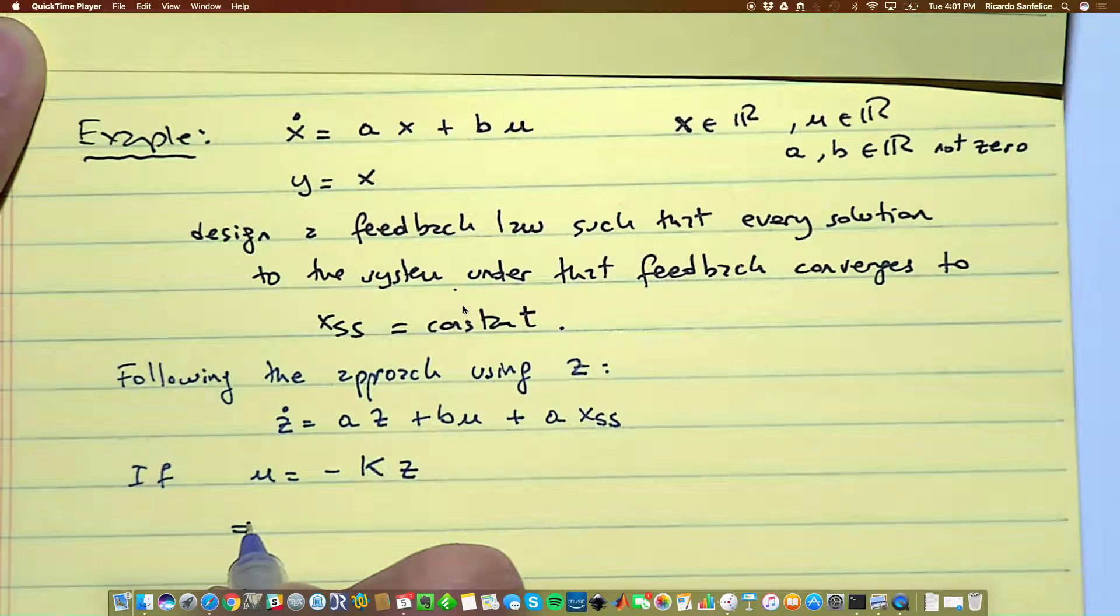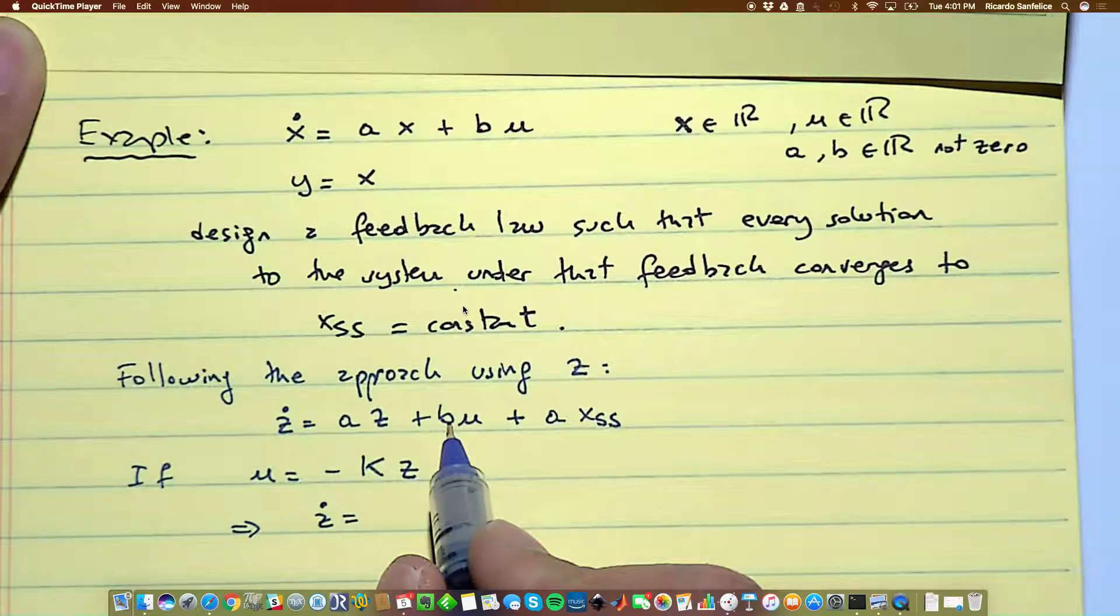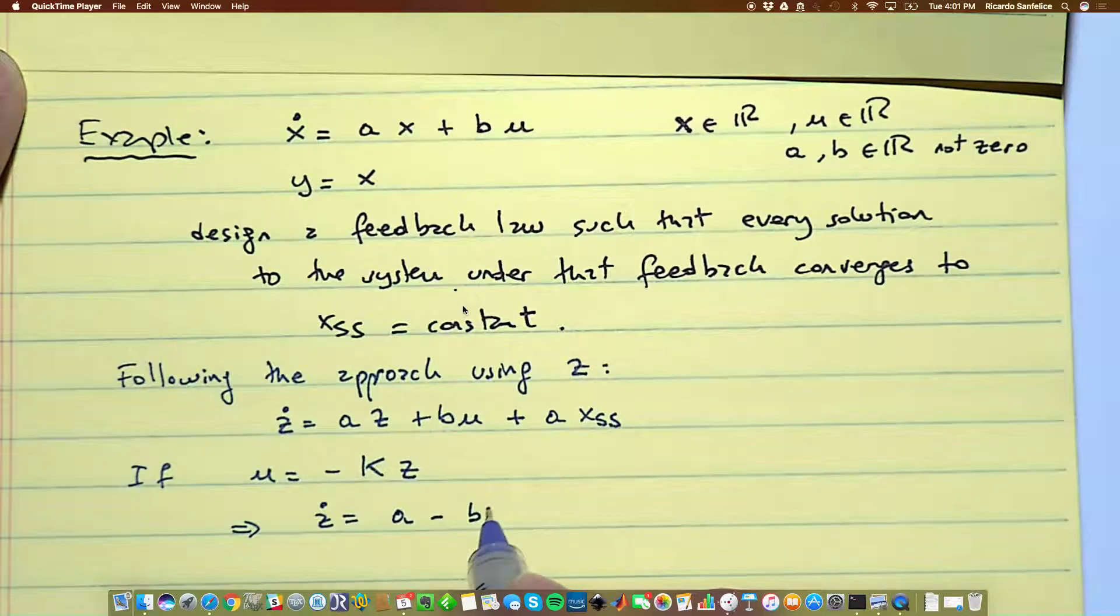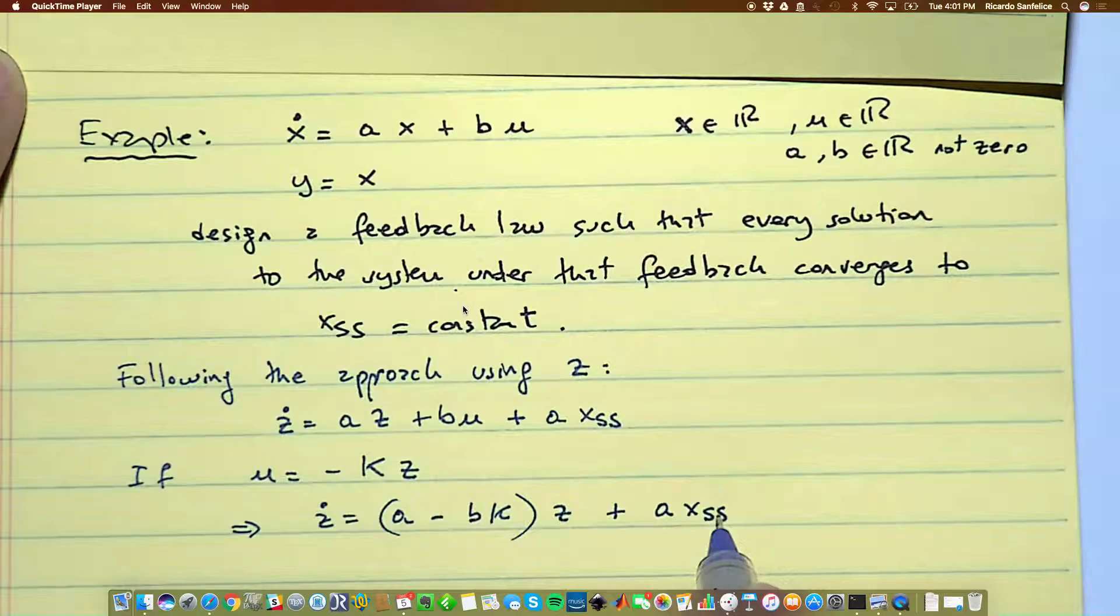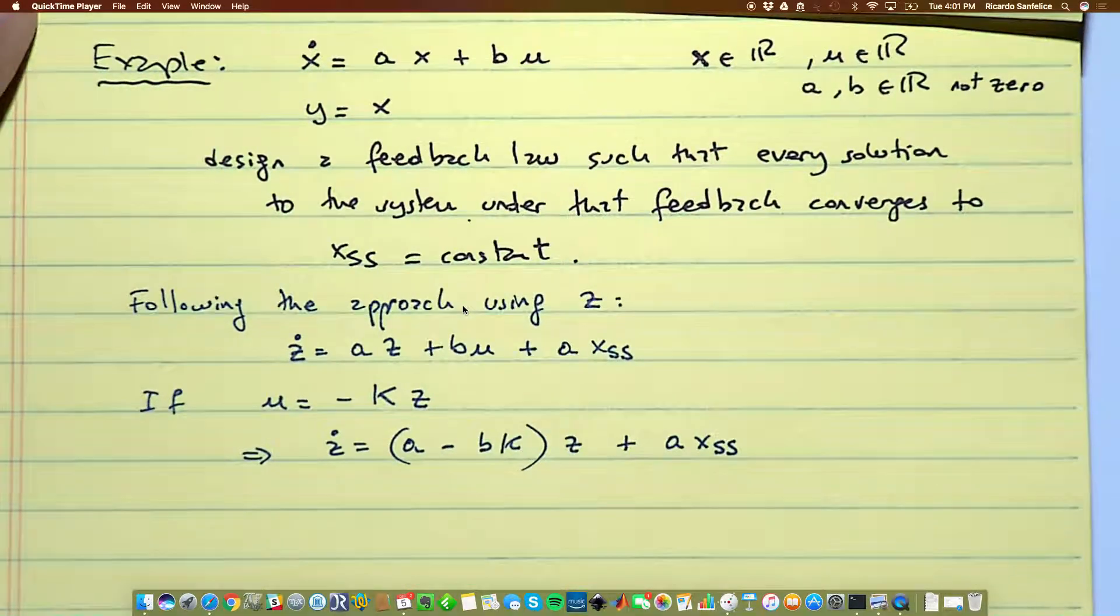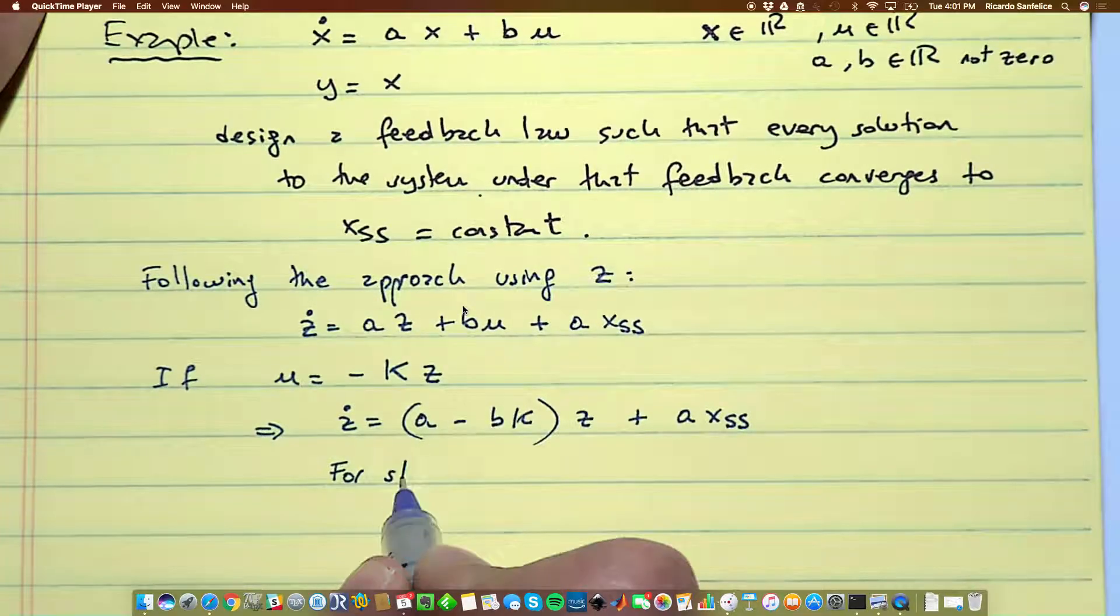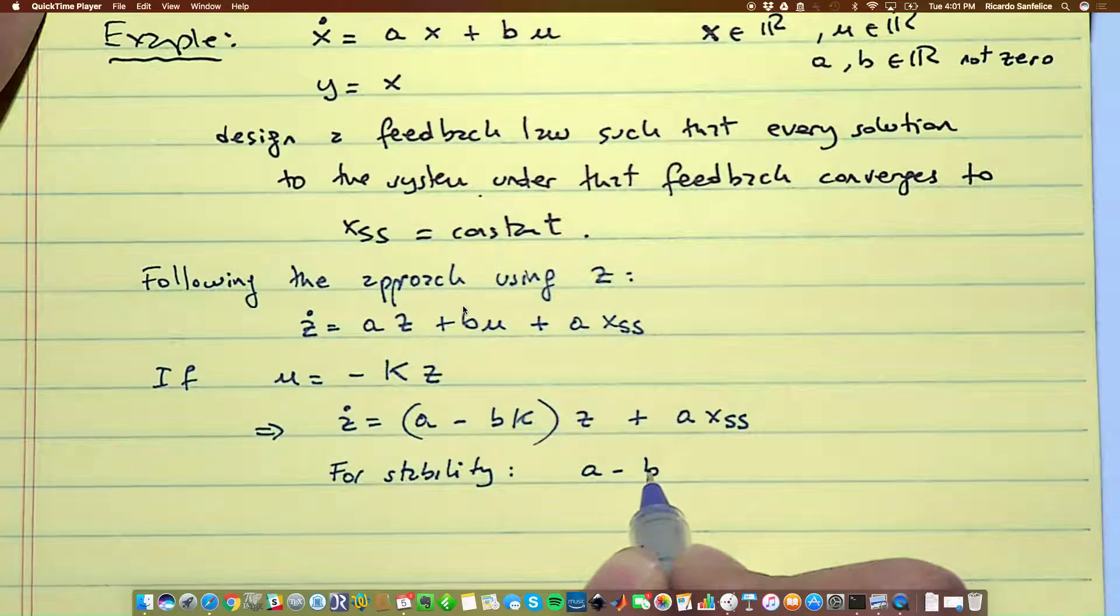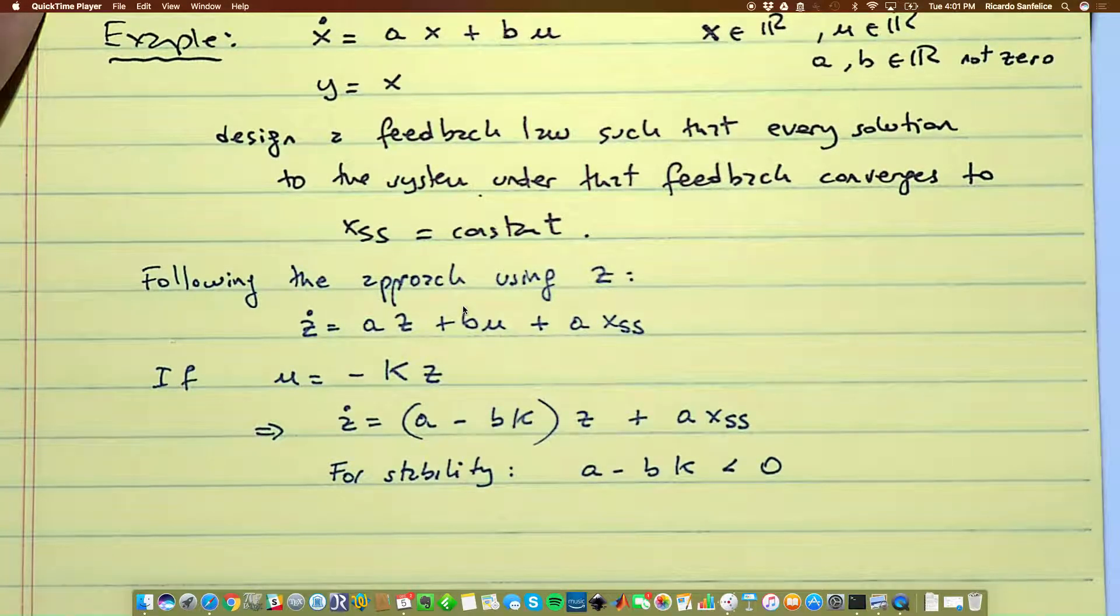Then what you will obtain is that the resulting closed loop system will be when you put the minus k here, you end up with a minus b times k and this multiplied by z and then ax_ss. So the design, for stability, we will need to pick a minus b k less than zero.